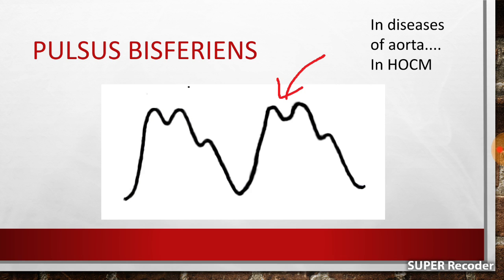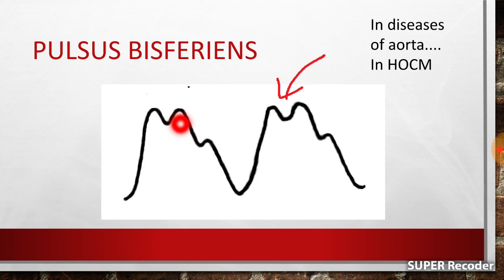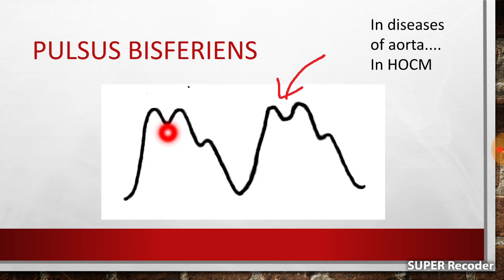Next is pulsus bisferens. As the name suggests, 'bis' means two — there is something double happening. In the diagram, you can see two upstrokes occurring before the dicrotic notch; that is, there are two peaks during systole in the arterial pulse wave. But actually, there are not two different upstrokes. During the single upstroke, there is a notch which occurs, making it look as if there are two peaks during systole.